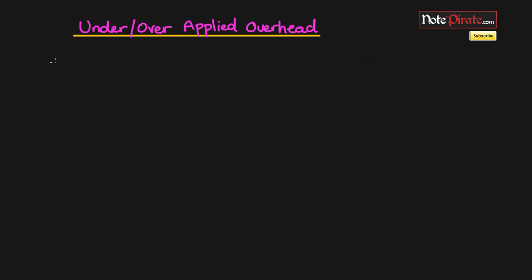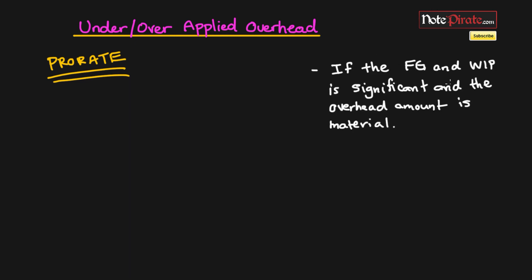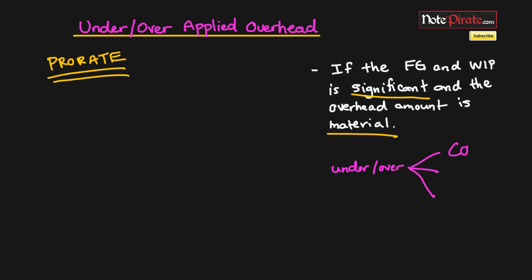The second option is to prorate the $50,000 of under applied overhead. We prorate it when the finished goods and work in process balances are significant and the overhead amount is material — meaning large enough to affect users' decision making. If we haven't sold everything and balances are significant, it makes sense to allocate the under or over applied amount among cost of goods sold, work in process, and finished goods.